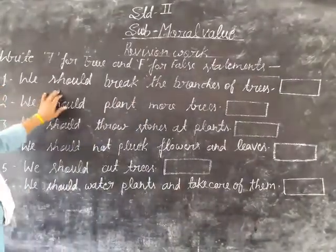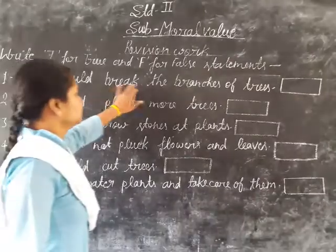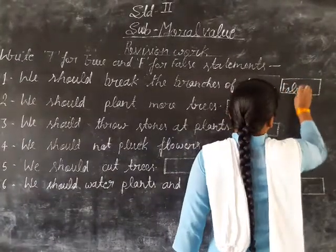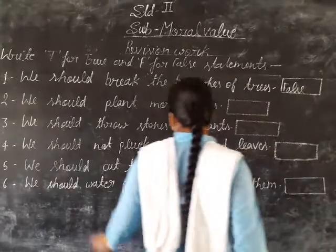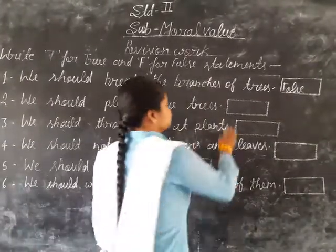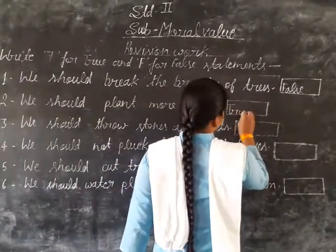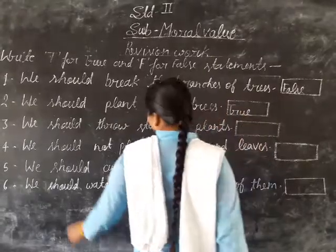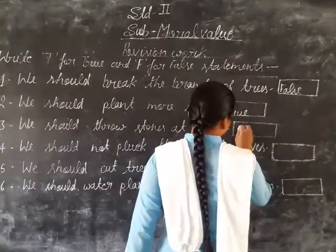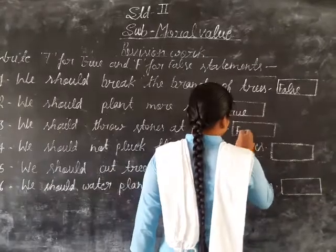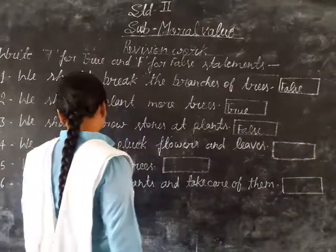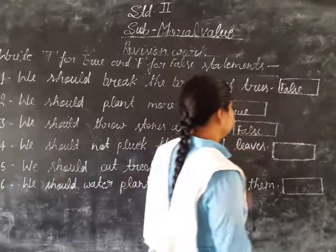First, we should break the branches of trees. Second, we should plant more trees. Third, we should throw stones at plants. Fourth, we should not pluck flowers and leaves.